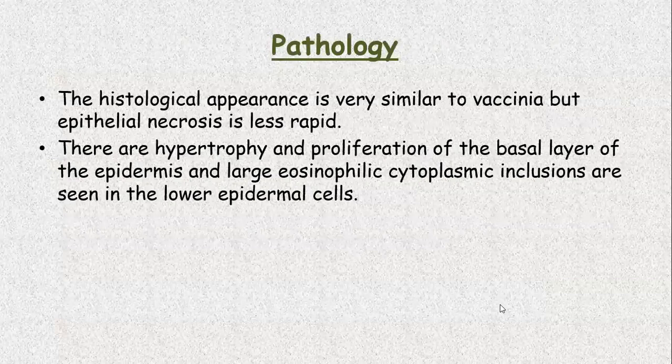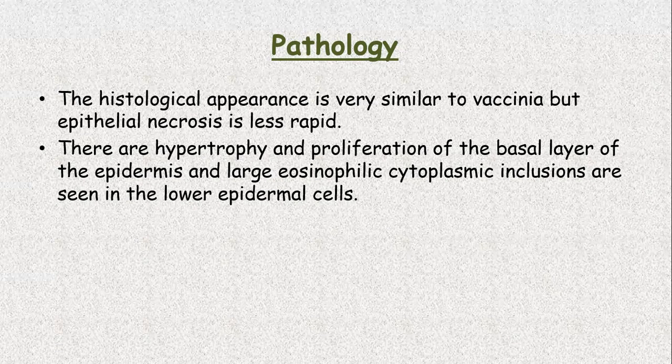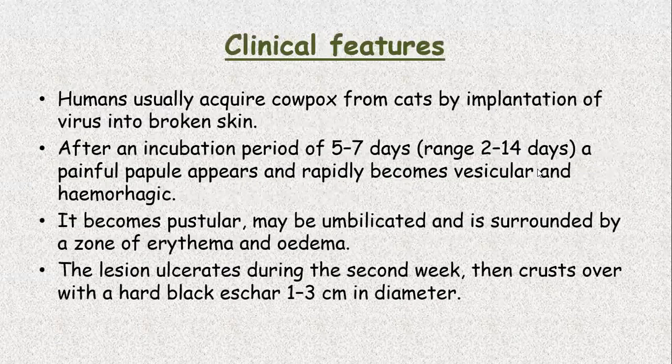Pathology. The histological appearance is very similar to vaccinia but epithelial necrosis is less rapid. There is hypertrophy and proliferation of the basal layer of epidermis and large eosinophilic cytoplasmic inclusions are seen in the lower epidermal cells. Clinical features. Humans usually acquire cowpox from cats by implantation of virus into the broken skin. After an incubation period of 5 to 7 days (range 2 to 14 days), a painful papule appears and rapidly becomes vesicular and hemorrhagic. It becomes pustular, umbilicated, and is surrounded by a zone of erythema and edema. The lesion ulcerates during the second week, then crusts over with a hard black scar 1 to 3 centimeters in diameter.